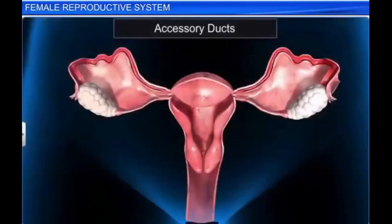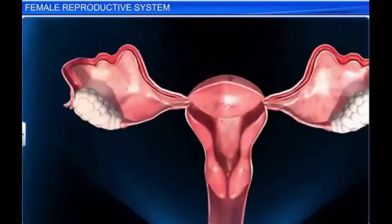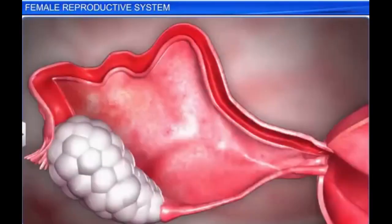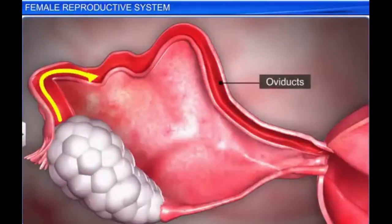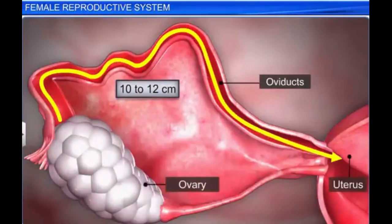The accessory ducts of the female reproductive system are the vagina, oviducts, and the uterus. The pair of oviducts, or fallopian tubes, is about 10 to 12 centimeters long, and extends from the periphery of each ovary to the uterus.